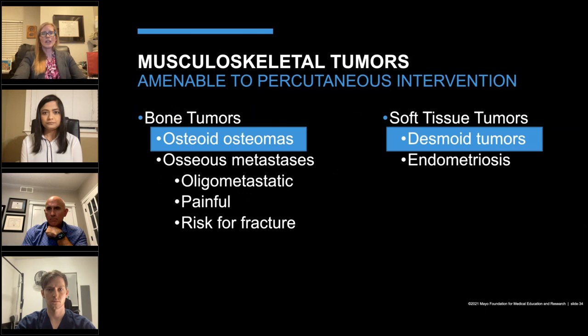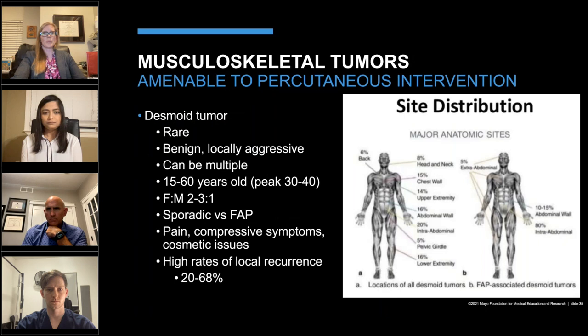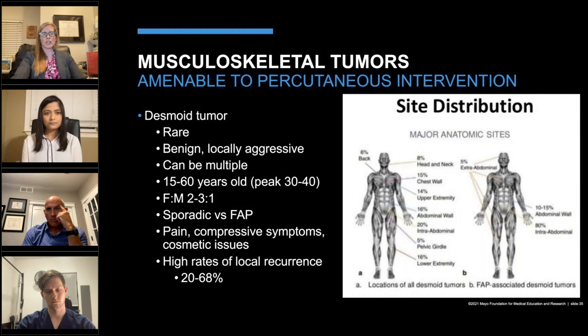Lastly, I'll briefly discuss the diagnosis of desmoid tumor. Desmoid tumor is a rare, benign, locally aggressive soft tissue tumor. They can be solitary or multiple and sporadic or occur in association with familial adenomatous polyposis syndrome. They typically affect patients between 15 and 60 years of age, with a peak incidence between 30 and 40 and a two-to-three female-to-male predominance. Even though these tumors are benign, they can be quite morbid due to their location and infiltrative characteristics, causing pain, compressive symptoms, and severe cosmetic issues. They also have a significant recurrence rate ranging between 20 and 68%.